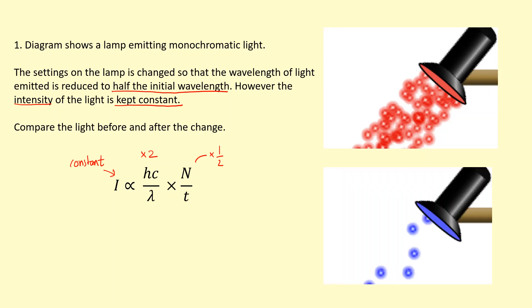So this is what's happened with the light. Each photon of the light is going to have more energy because we've gone towards the blue spectrum and shortened the wavelength. However, to keep the intensity constant, we have to reduce the number of photons per unit time to half the initial amount.